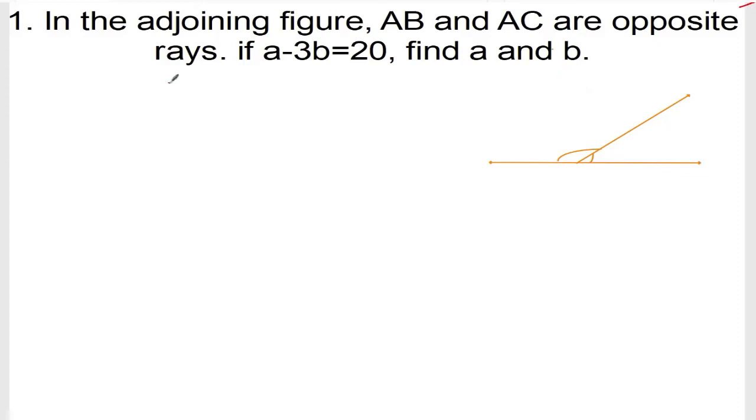We are doing exercise 6.1, question number 1. In the adjoining figure, AB and AC are opposite rays. If A minus 3B is equal to 20, find A and B.